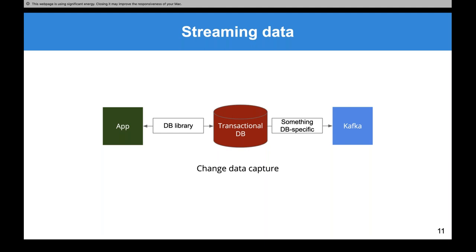Other ways of getting data into Kafka: our application might use a transactional database like MySQL or MongoDB. We may load data from that transactional database into Kafka using something database-specific — this is called change data capture. It's just a fancy term for getting a stream of changes out of a transactional database into some other system, in this case Kafka. Another great way of getting data in.